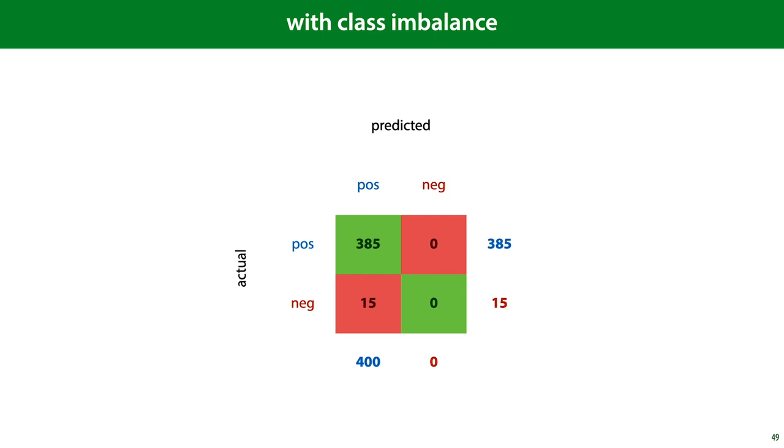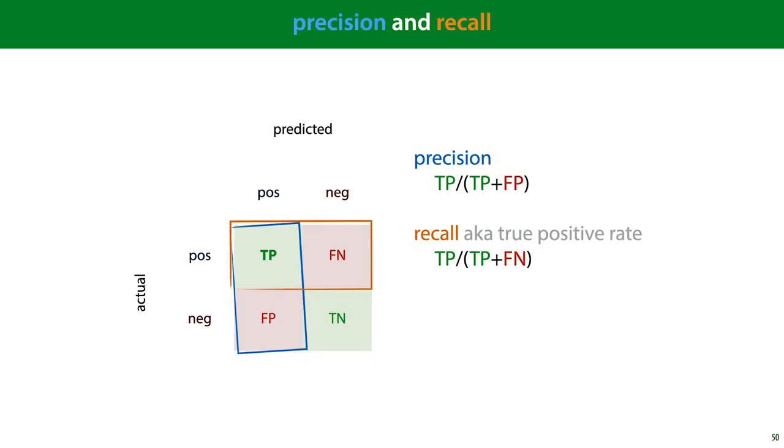And what we see here is a classifier that has decided to predict that everything is positive. From the true positives, false positives, false negatives, and true negatives, we can compute a number of valuable metrics that can help us identify where a classifier is having problems.